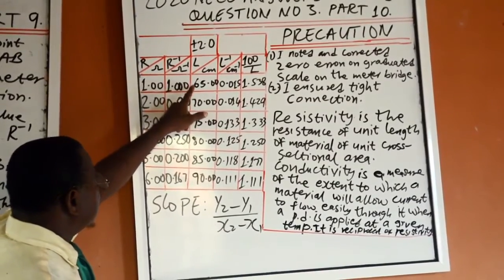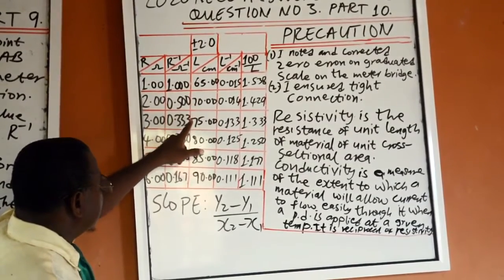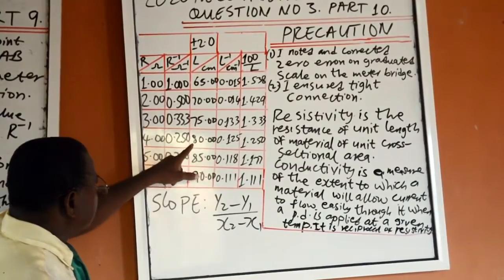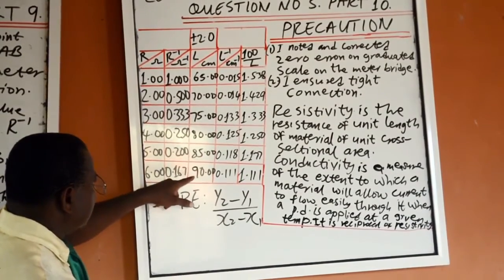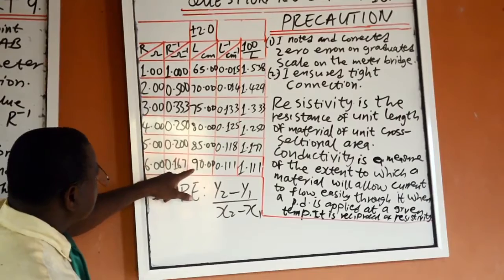That is 63. This one is 68. This will be 73. This will be 78. This will be 83. This will be 88.